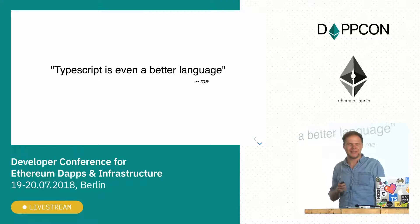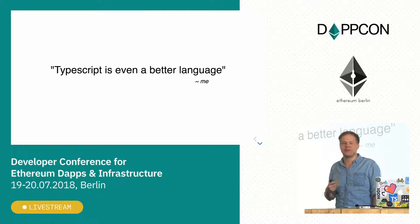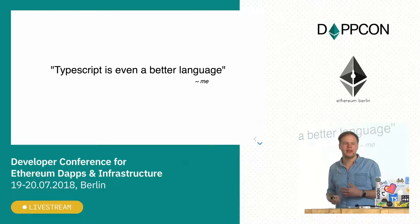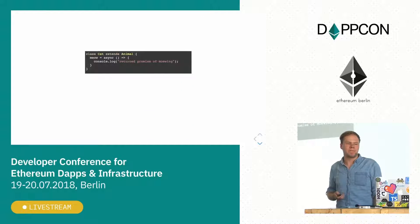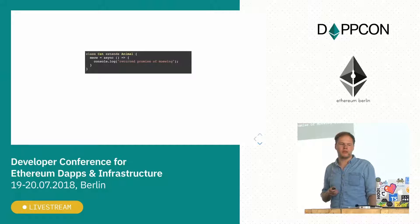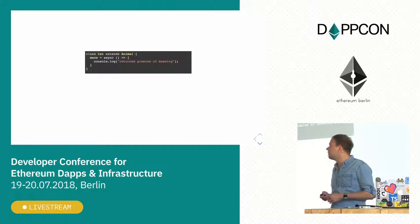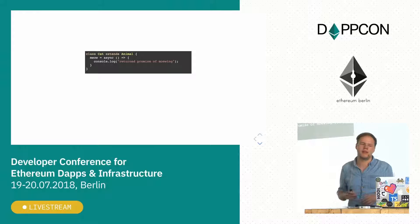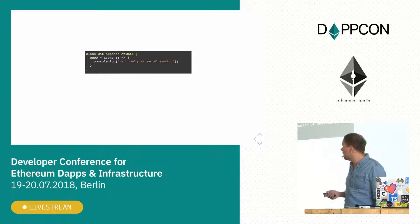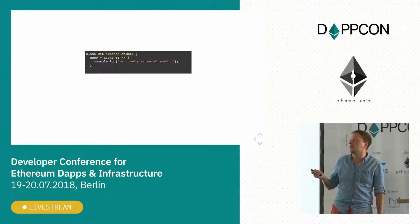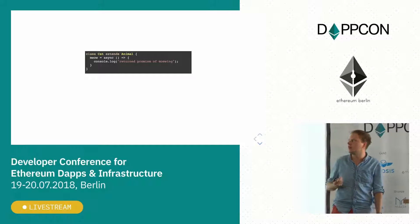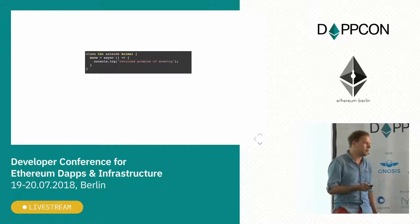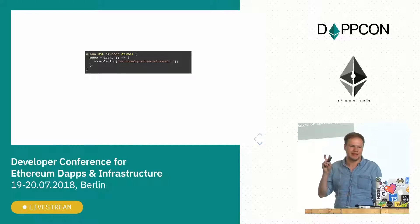TypeScript is an even better language — it's an attempt to fix all these problems and sneak type safety into JavaScript without changing the language itself. It turns out we don't have to introduce any changes to the first code snippet; it's fully valid TypeScript code, and the TypeScript compiler can infer types — for example, the meow function returns a promise of void. The TypeScript compiler is pretty good at guessing types.